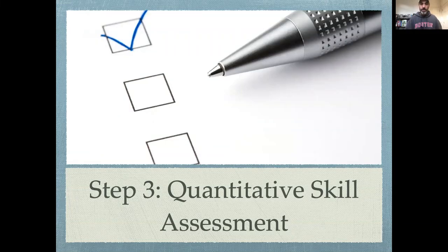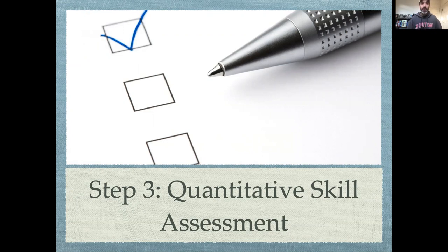Welcome back to our videos on model assessment. In this video, I'm going to cover the third step in model assessment, which is doing some sort of quantitative skill assessment. This follows on the first two steps of doing basic sanity checks on your model and model output, and then doing visual qualitative graphical assessments of model performance between model and data. The third step is to put some sort of skill score on that model performance.